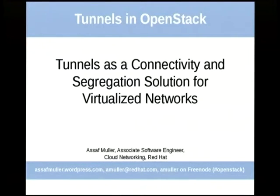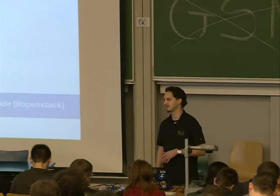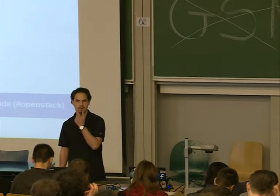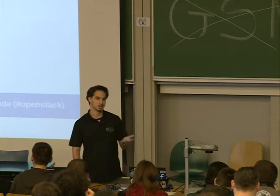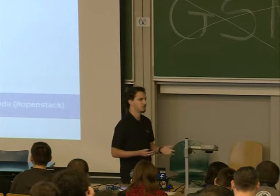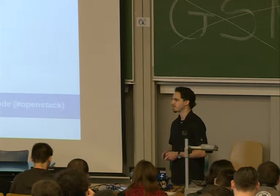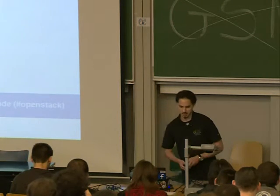A bit about VLANs, just an introduction. How do we use VLANs to hook up VMs and maybe even segregate to different networks. And the shortcomings of VLANs, and how do we use tunnels to solve the same problem that VLANs currently solve and maybe even more.